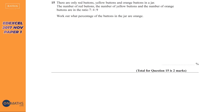We're told we have red, yellow, and orange buttons in a jar. The order they say in the question is the order they are in the ratio, so there's seven red to four yellow to nine orange. The order is important and we're asked to work out the percentage of the buttons in the jar that are orange.